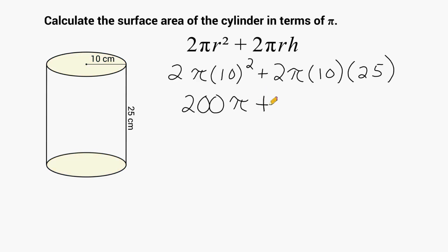And to the right of our plus sign, we have to multiply 25 times 10, which is 250, and 250 by 2, which is 500. So 500 pi would give us the lateral area of our cylinder.